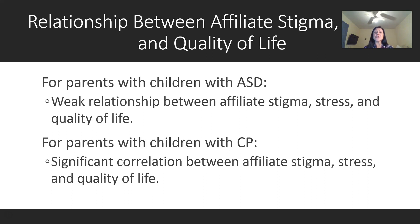In terms of the relationship between affiliate stigma, stress, and quality of life: for parents of children with autism spectrum disorder, affiliate stigma did not play a big part in stress and quality of life, suggesting these parents do not possess negative views about themselves that could affect their psychological well-being. On the other hand, for parents of children with cerebral palsy, respondents with high stress had high affiliate stigma, and respondents with less stress had a better quality of life, although this effect was moderate.